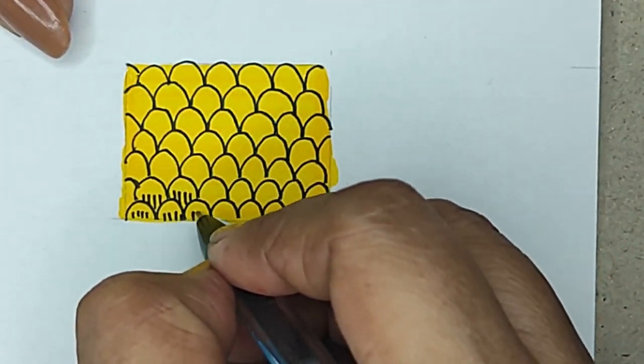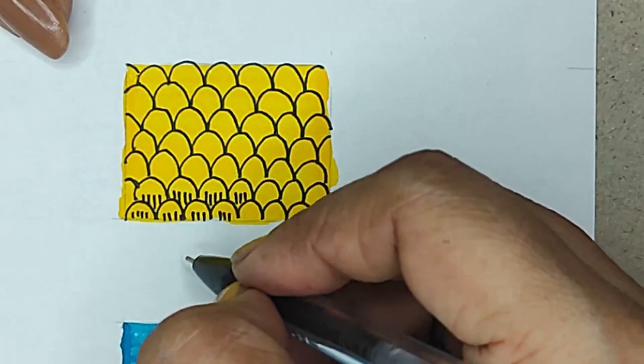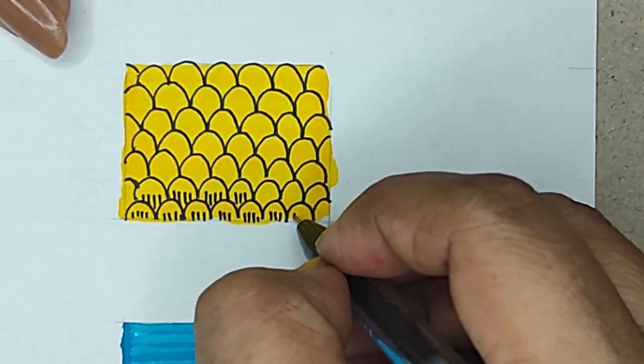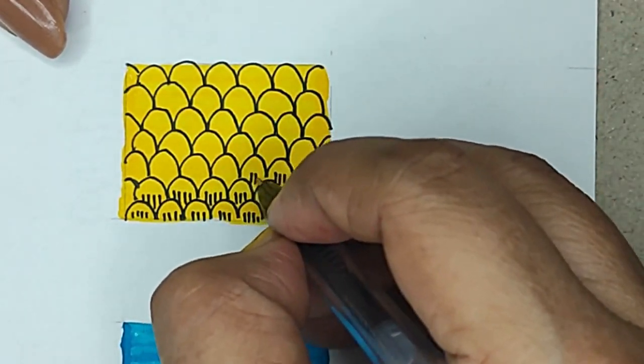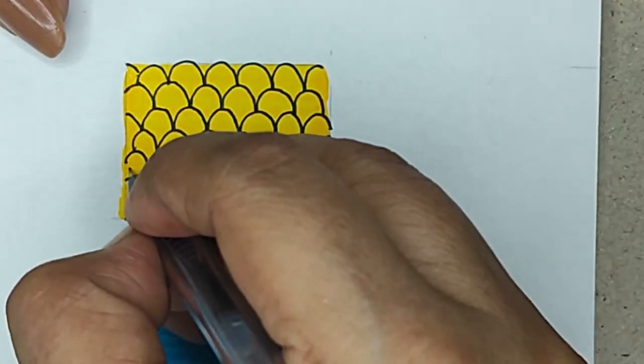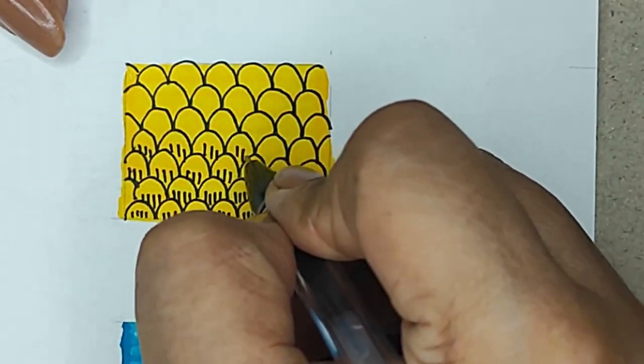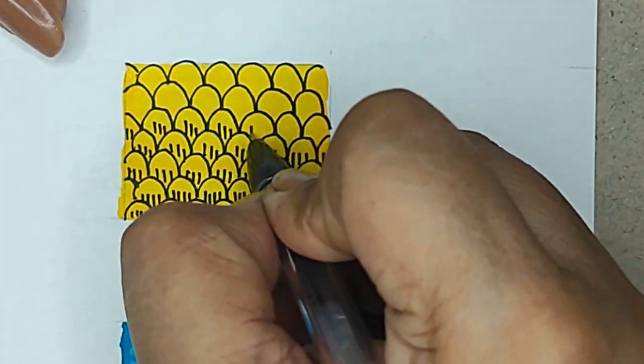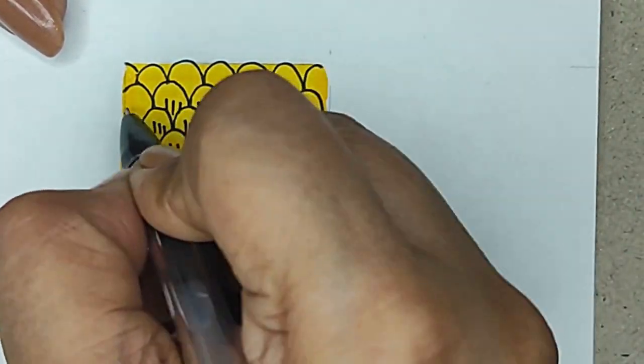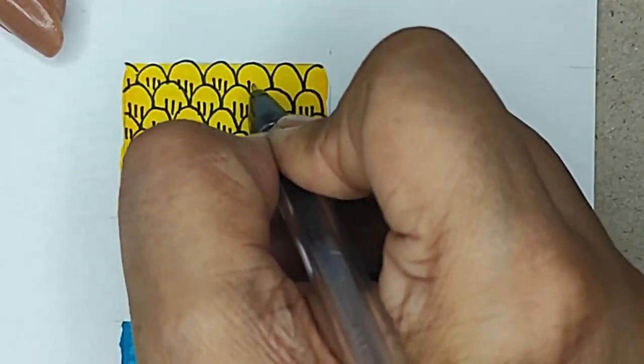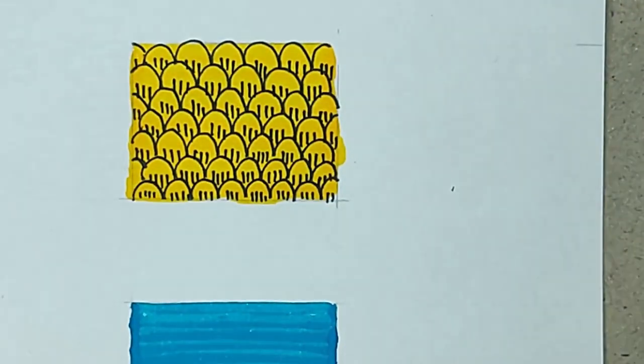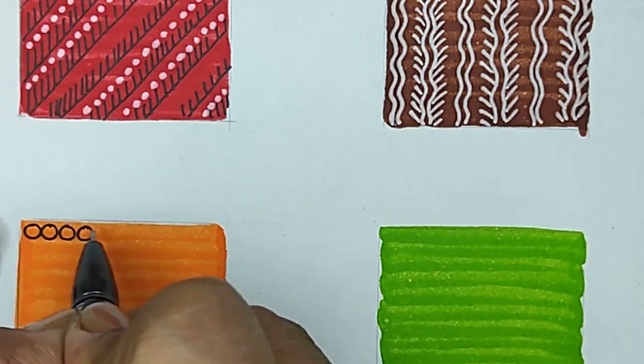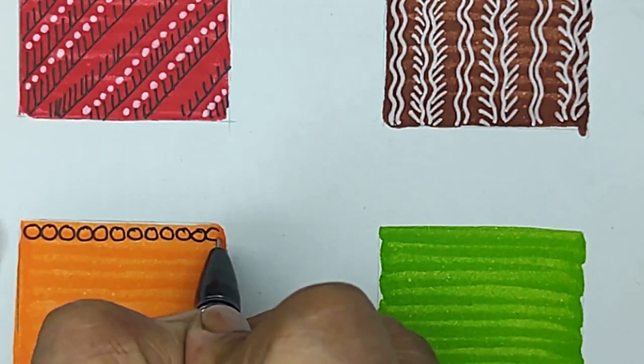So whenever we see the pictures of Gond art we see that there are animals transforming into plants and the plants taking the shape of animals or vice versa. This shows the interdependence and there are few legendary stories that the Pradhans used to convey through that. Now here I am making very simple symbols which are repetitively done.